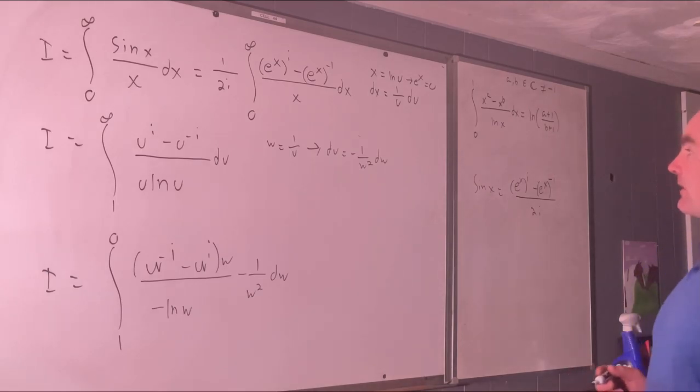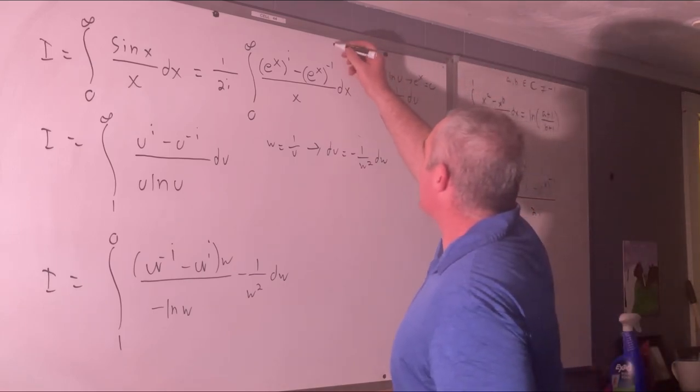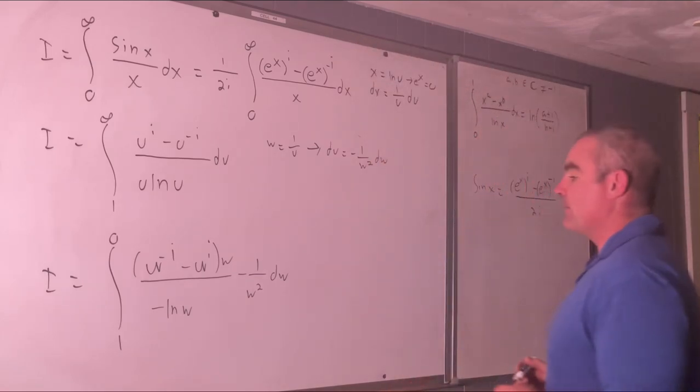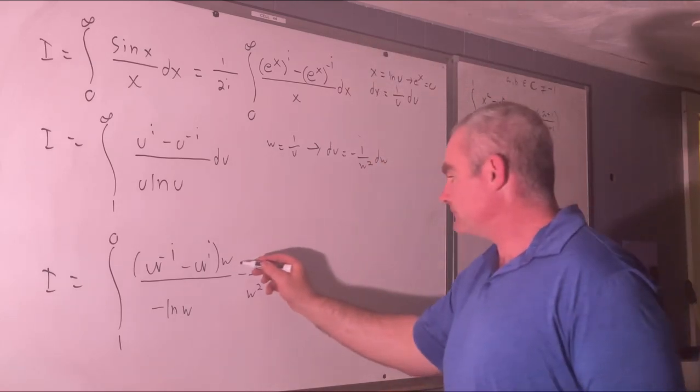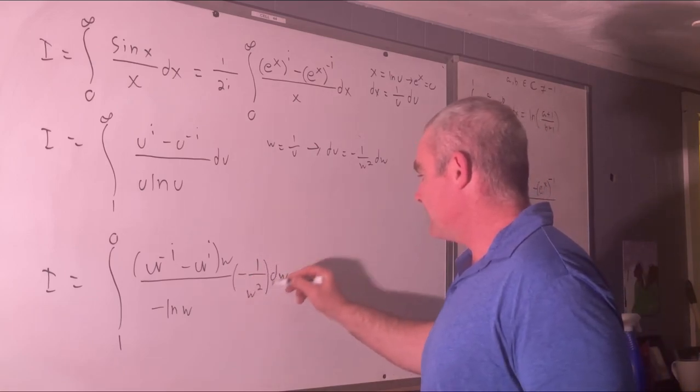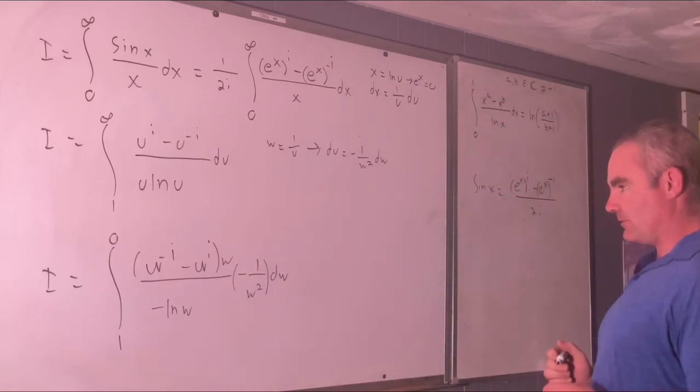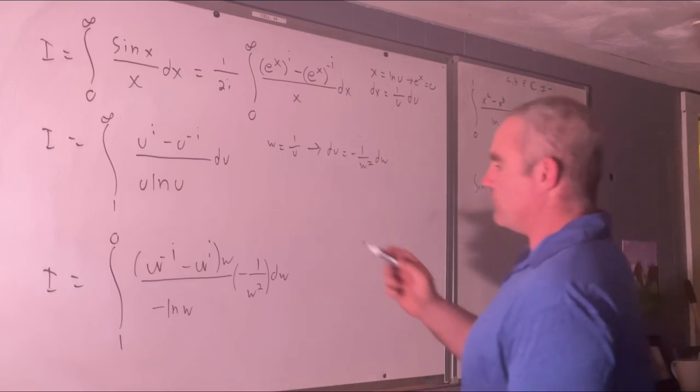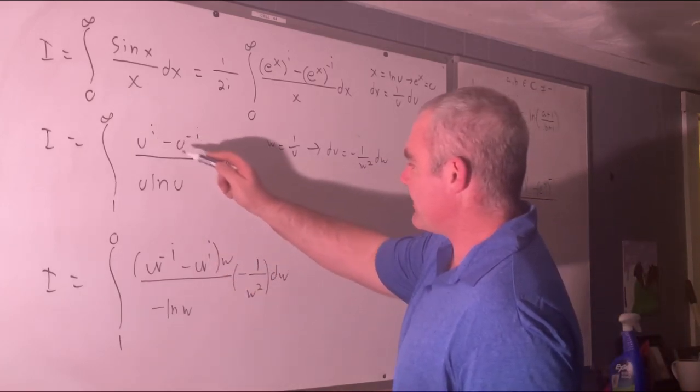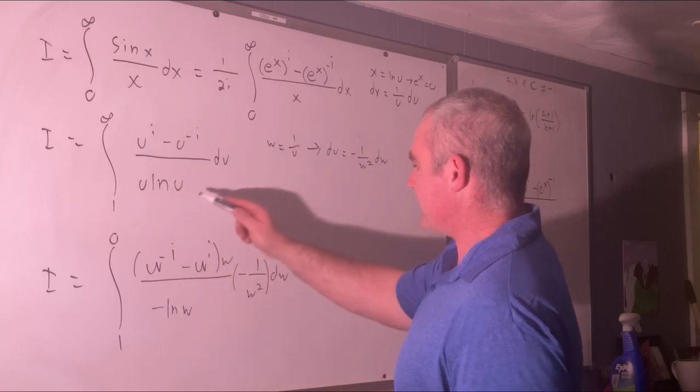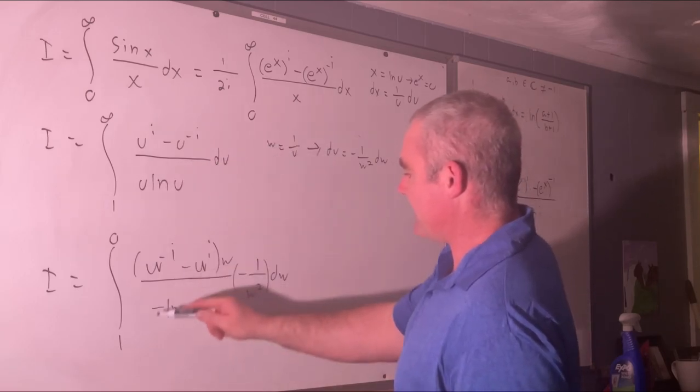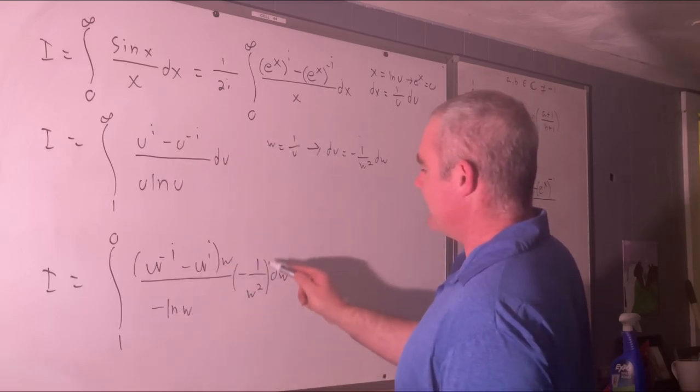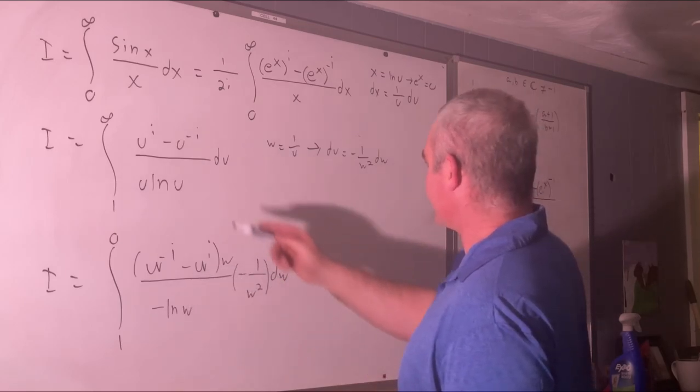Excuse me, one minute. Alright, sorry about that. I thought I heard my dog getting into something he shouldn't. This is negative i. That's not minus 1 over w squared. That's times negative 1 over w squared. Alright, I believe that's everything I needed to do. Yeah, we switched that. We switched that. This went up to the top. This became a negative natural log w. We switched the bounds. We substituted for du.